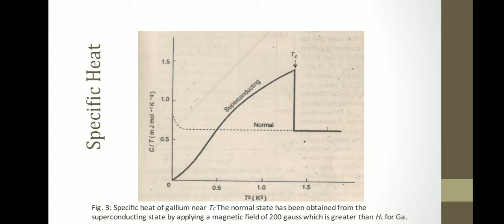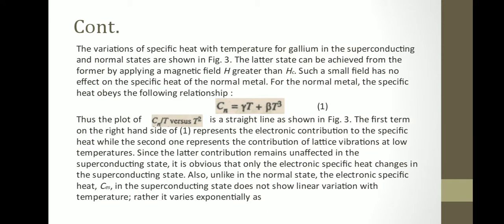When the dotted line shows what is the specific heat of the normal material, if we are able to apply the magnetic field, the variations of the specific heat with temperature for gallium in the superconducting and normal states are shown in Figure 3. The latter state can be achieved from the former by applying a magnetic field H greater than Hc. Such a small field has no effect on the specific heat of the normal metal. For the normal metal, the specific heat obeys the following relationship: CN equals gamma T plus beta T cubed.